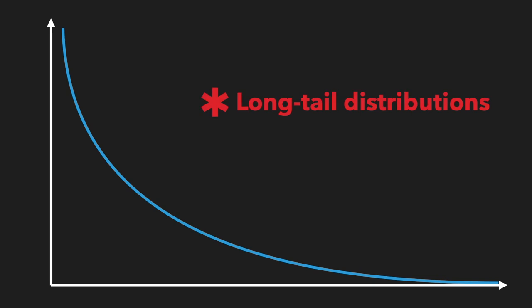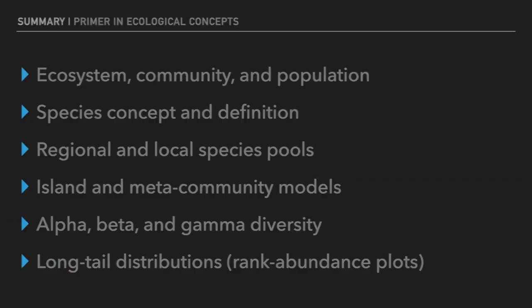So, to recap, we reviewed some fundamental concepts in ecology, including the definitions of ecosystem, community, and population. We discussed the species problem and the difference between species concepts and species definitions. We talked about regional and local species pools and how we can conceptualize them in frameworks like the island model and the metacommunity model. We described what alpha, beta, and gamma diversities are and gave some sample metrics to measure them. And we talked about long-tail distributions of species, how to represent them through rank abundance plots, and their universality in natural communities.